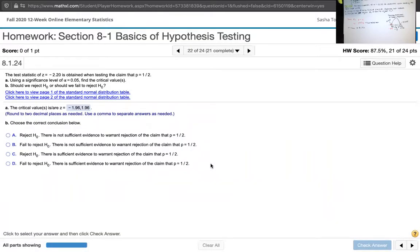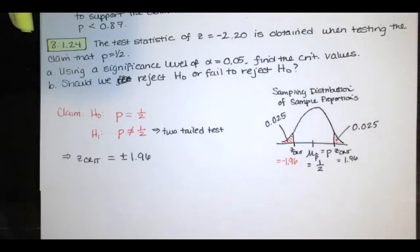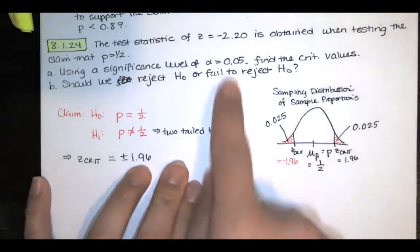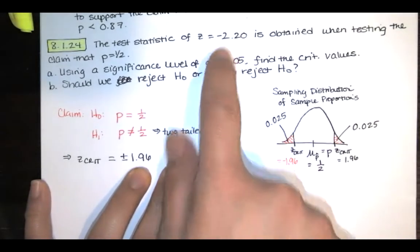And then it says, state the correct conclusion below. Now, let's go back to our picture. When we're deciding what to conclude, we need to see where our test statistic is relative to those critical z values or relative to that critical region.